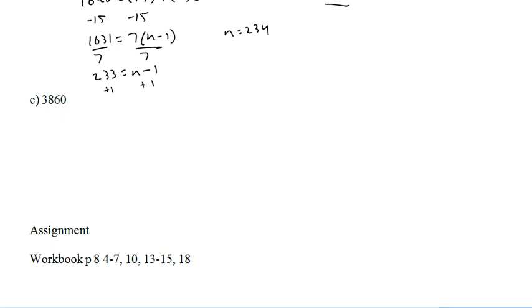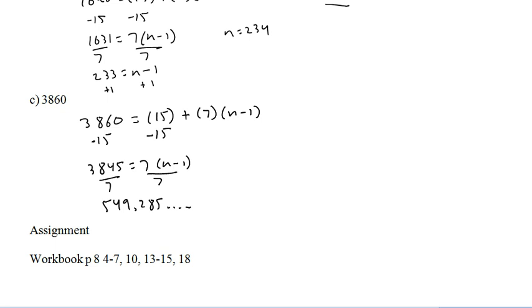And, let's have a look at the last guy here. Do the same thing. 3860 equals 15. Same thing again. Subtract 15 from both sides. Divide both sides by 7. And, we get 549.285 blah, blah, blah, blah, blah equals N minus 1. Well, this decimal here tells us that it's going to end up between two of the terms. So, it won't be like if it was 549, it would be good. If it was 550, it would be good. 549 point something tells us it's not one of the terms. It's going to fall between two of the terms. So, no. That guy is not part of the sequence.